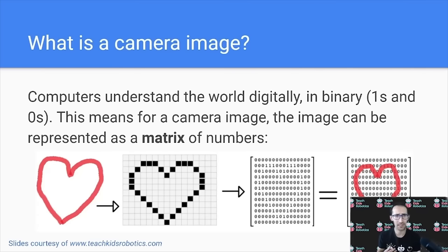But how does this work really? So let's first consider what is a camera image? Since computers understand the world digitally, in binary with ones and zeros, this means that for a camera image, the image must be represented digitally as well. So to represent the image, we can convert that into a grid.